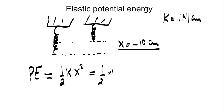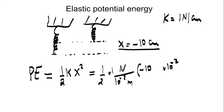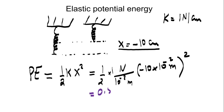So: one half times K, which is 1 Newton per centimeter (1 centimeter = 10 to the negative 2 meters), times X which is negative 10 centimeters times 10 to the negative 2, everything squared. The square of a negative number is positive, giving us 0.5 joules — the same result. If we compress or stretch by the same amount, we get the same elastic potential energy.